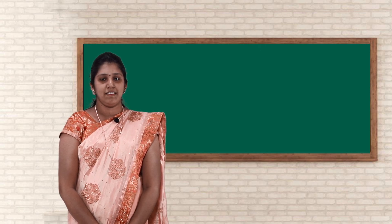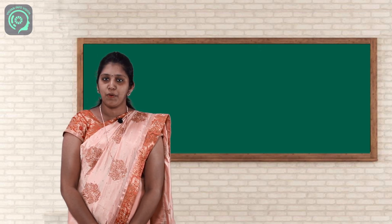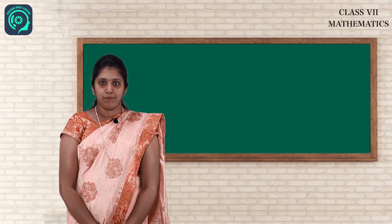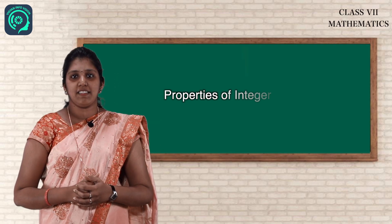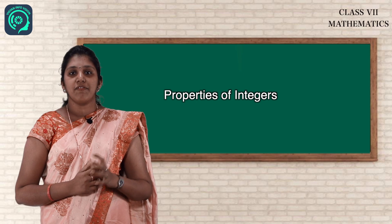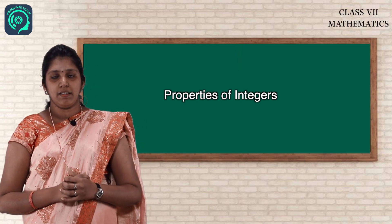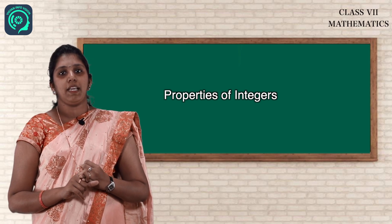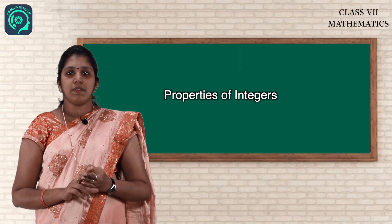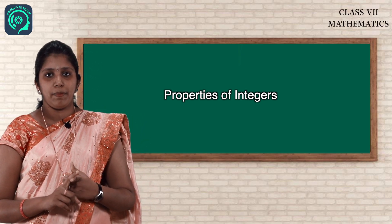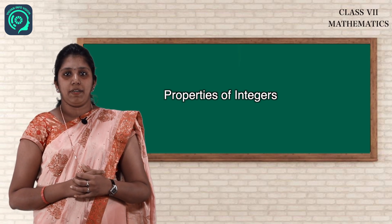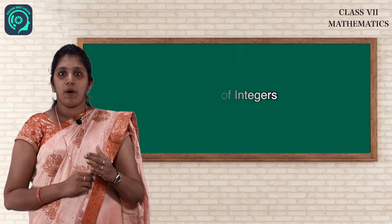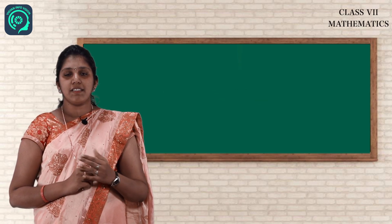Hello children, how are you all? Hope everyone is safe and secure at home. Let us see properties of integers. We have five main properties: closure property, commutative property, associative property, distributive property, and identity property. Let us see all the properties one by one.